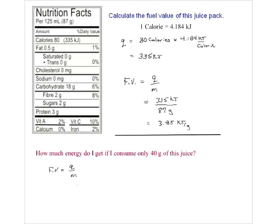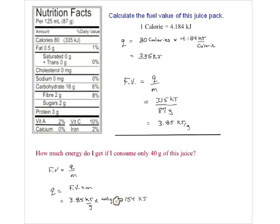Fuel value = Q/m, so Q = fuel value × mass. That's 3.85 kJ/g × 40 g = 154 kilojoules. If you're concerned about calorie intake and 154 kJ is well within your ballpark, that's how much juice you drink.